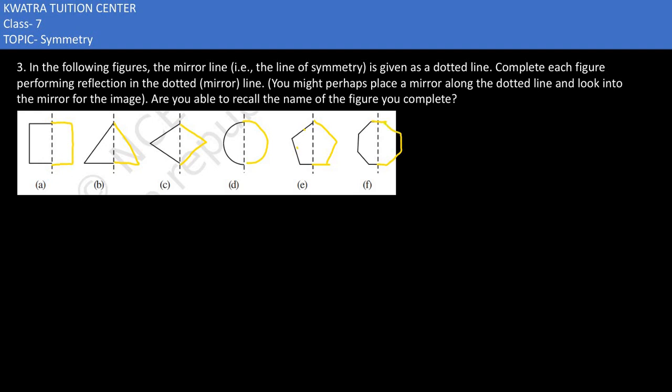So this is an octagon. Are you able to recall the name of the figures you completed? Obviously the first one is a square, the second one is a triangle, this is a quadrilateral with four sides, then the circle, then the pentagon with five sides, and then the octagon with eight sides.